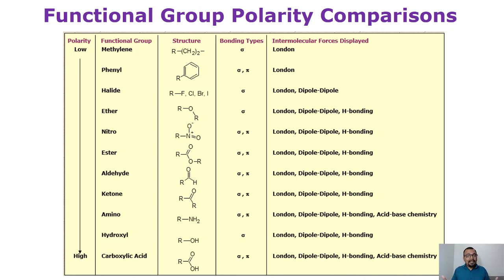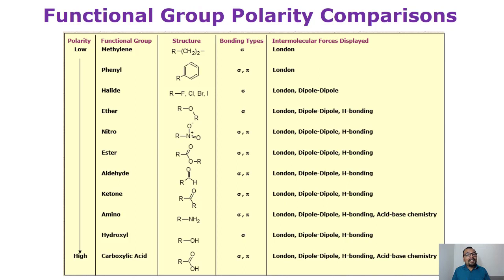In the case of phenyl, again London dispersion forces apply, but there will also be a small amount of pi-pi interaction contributing to retention. Halides — fluorine, chlorine, bromine — are all very polar in nature and bring dipole-dipole interaction because these are highly electronegative atoms. So if a molecule has halide atoms, it can interact with the stationary phase via dipole-dipole interaction in addition to London dispersion forces because of the carbon chain.